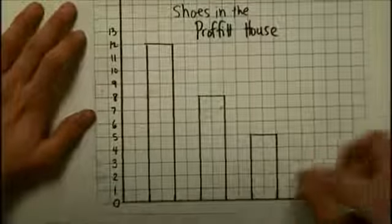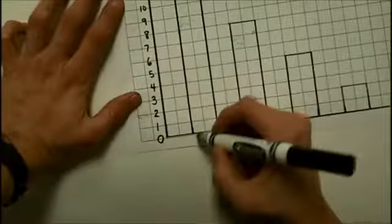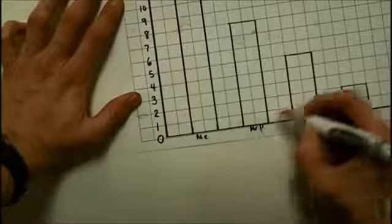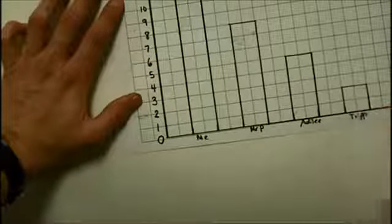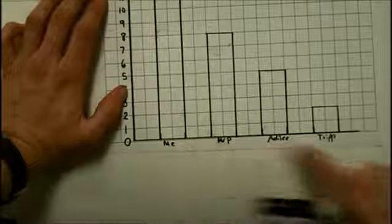Now I'm going to do an x-axis, and I'm going to label each category on the x-axis. So, this was me. The next one was Mr. Profit. Then, it was Adley and Tripp, but it's not enough just to label your categories.